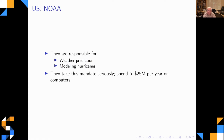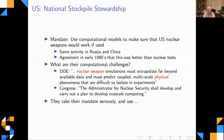The United States has its own hurricane model called the American model; the Europeans also have one, and there's competition between the two — the European model often does better. Hurricane modeling is something governments invest heavily in, because knowing where hurricanes will go saves lives. They spend a lot of money on computers for this.